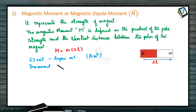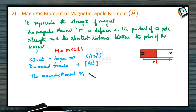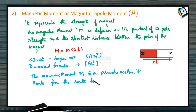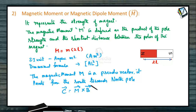The magnetic moment capital M is a pseudo vector. It points from the south pole towards the north pole. Later we will study that the torque acting on the bar magnet is equal to the cross product of magnetic moment and the magnetic field vector. The direction of magnetic moment will be defined from this particular relation.